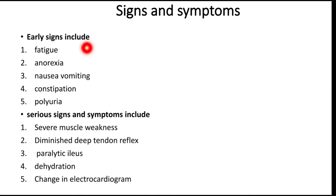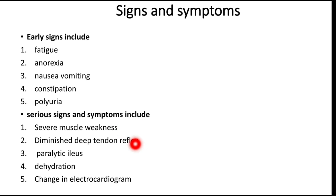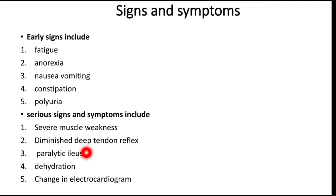Signs and symptoms of hypercalcemia: early signs include fatigue, anorexia, nausea, vomiting, constipation, and polyuria. The serious ones include severe muscle weakness, and diminished deep tendon reflexes — such as biceps, triceps, patella, ankle, and brachioradialis reflexes. Paralytic ileus can occur because of elevated calcium levels causing the nerves and muscles of the intestine to malfunction, leading to impaired digestive movement.